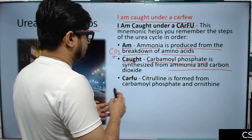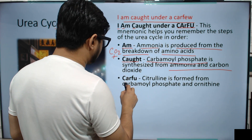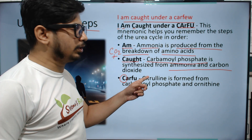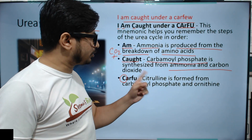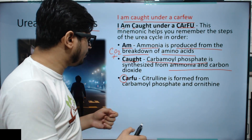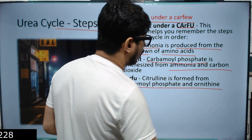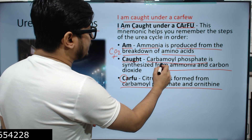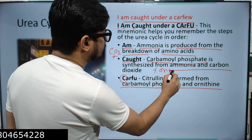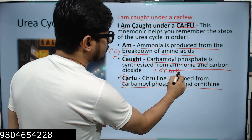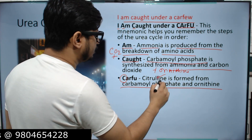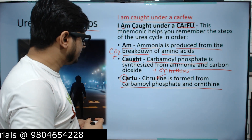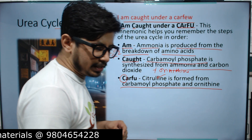Then C in 'Caught' stands for Carbamyl Phosphate, which is synthesized from ammonia and carbon dioxide — the ammonia produced along with CO2 produces Carbamyl Phosphate. The next step: C in 'Curfew' stands for Citrulline, which is formed from Carbamyl Phosphate and Ornithine.